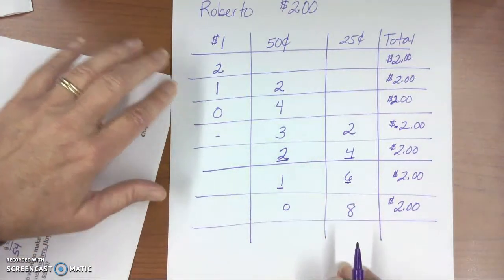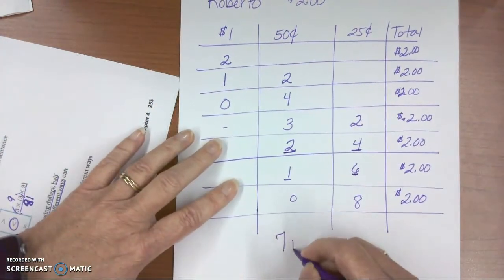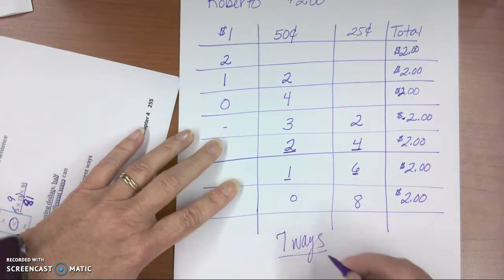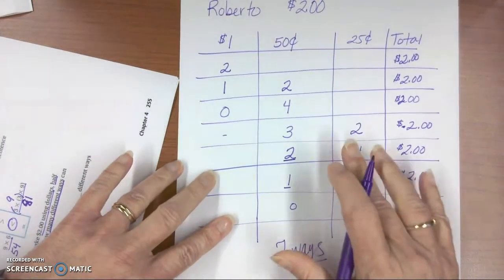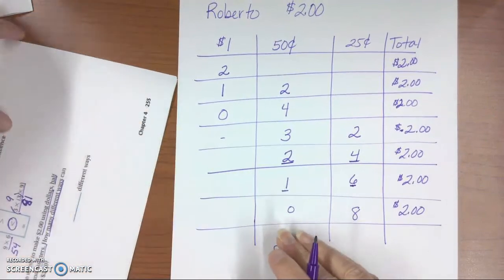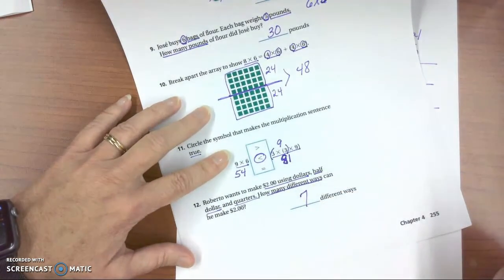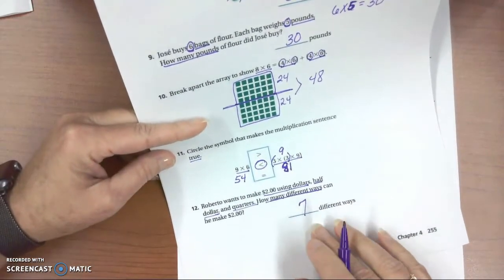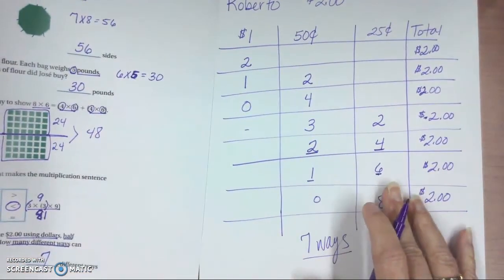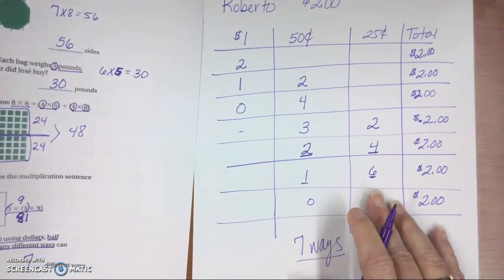So there are one, two, three, four, five, six, seven ways that we could work this problem. Now, your teacher would expect to see this work, or however you organized your information, along with the answer of seven different ways. So not just a number written down here, but also the work that you did to solve the problems. Very important so the teacher can see your thinking.